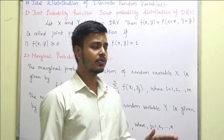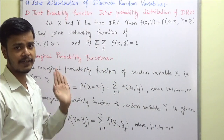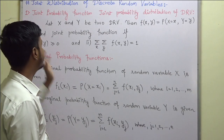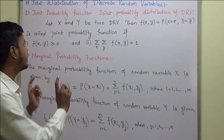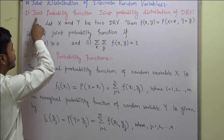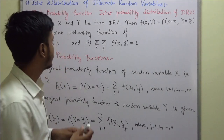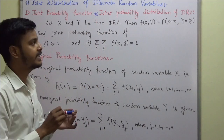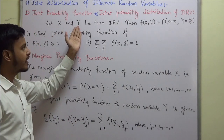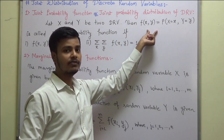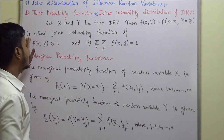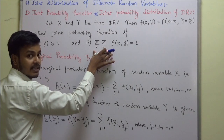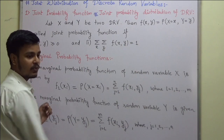We are going to learn joint distribution for discrete random variable first, followed by some definitions and examples, and then we will see joint distribution for continuous random variable. The very first definition is the probability function. Because we have more than one random variable here, it is now called the joint probability function or joint probability distribution of discrete random variable. Suppose we have two random variables x and y; the function f(x,y) representing the probability of X=x and Y=y is called the joint distribution function if f(x,y) ≥ 0 and the sum over x and y of f(x,y) equals 1.